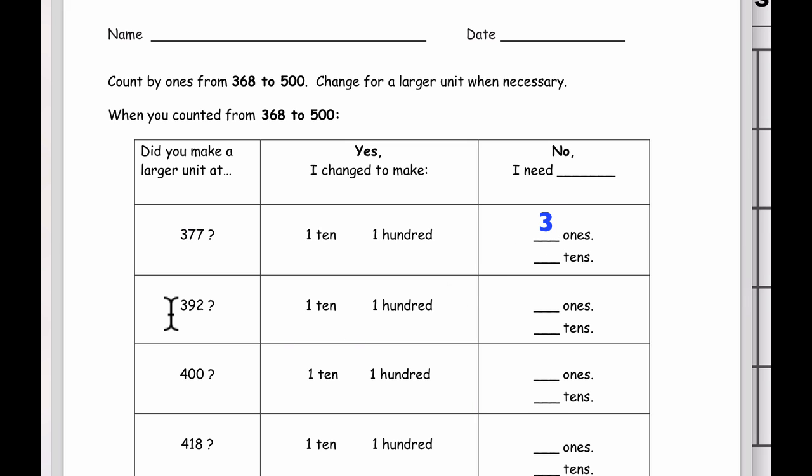And then as they're counting and they get up to 392, have we cached in anything at 392? The answer is no. So over here, we know that we need eight more ones before we're ready to cash in.